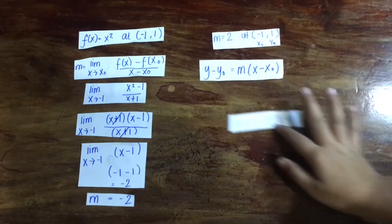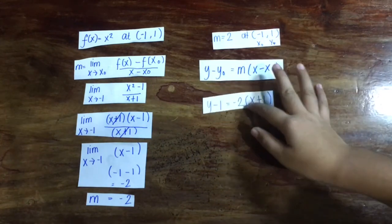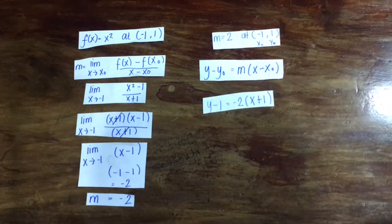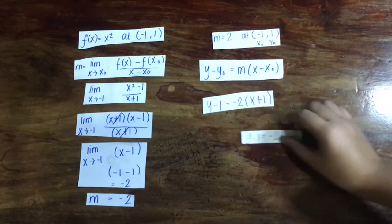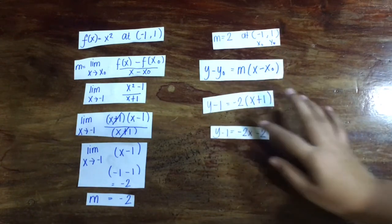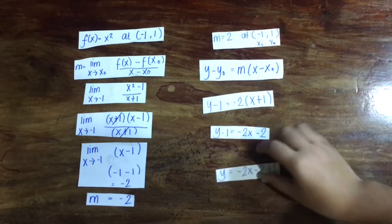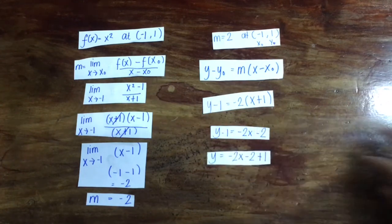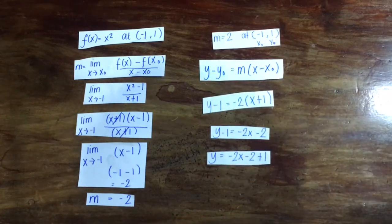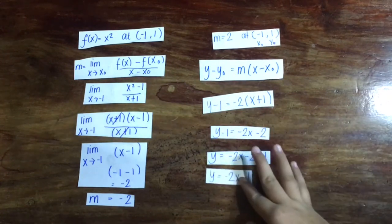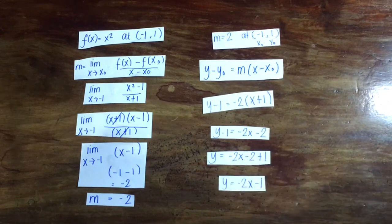Using the point-slope formula, we obtain y minus 1 equals negative 2 multiplied by x plus 1. We distribute negative 2 to x plus 1, then move negative 1 to the right side of the equation, then combine like terms. The equation of our tangent line is y equals negative 2x minus 1.